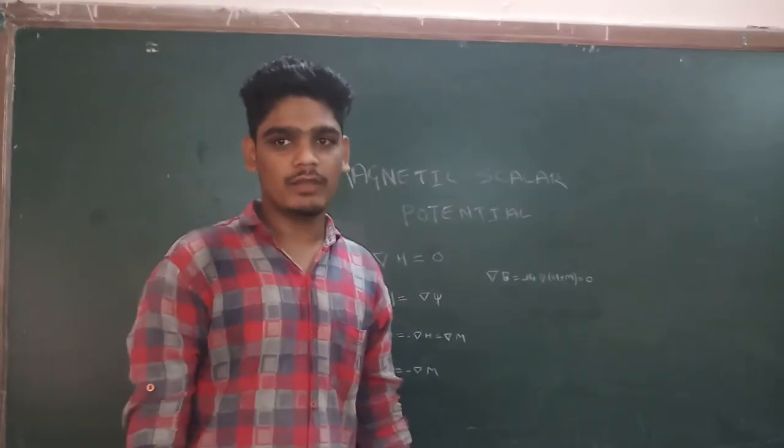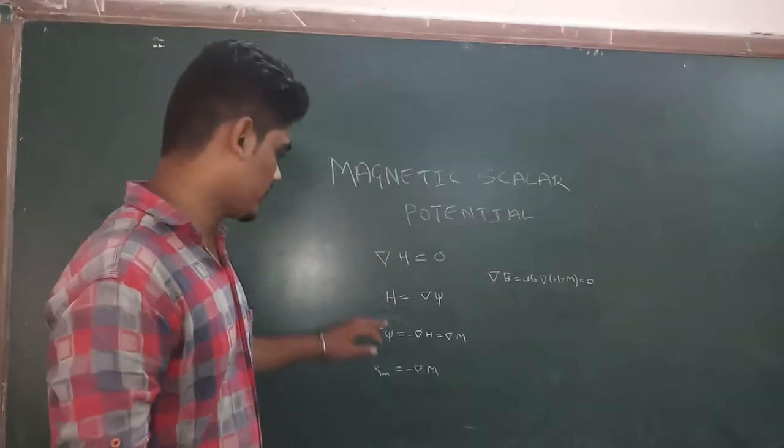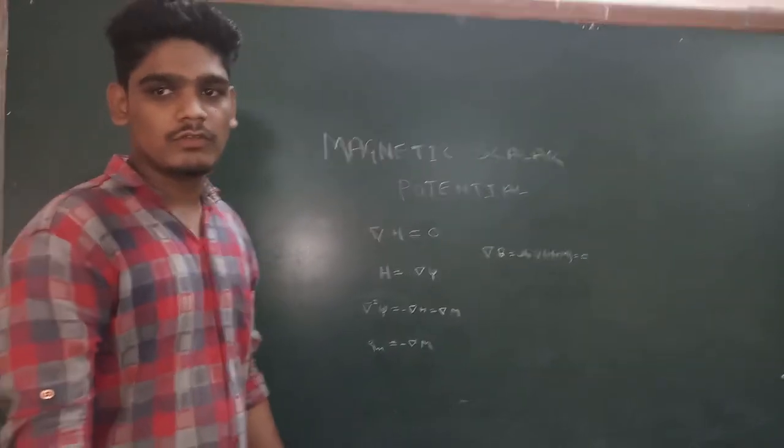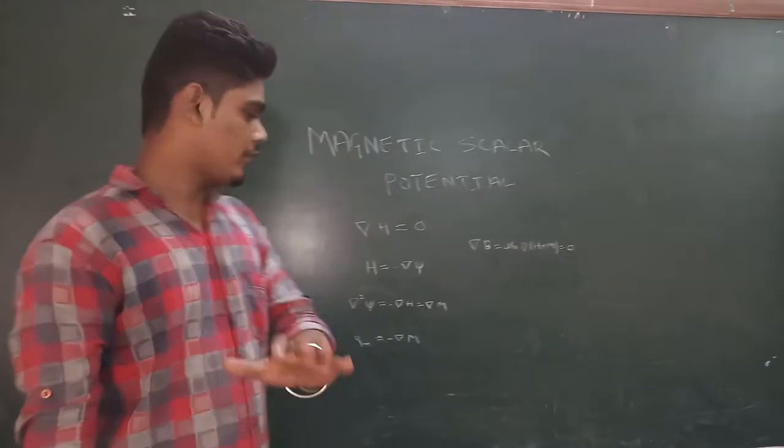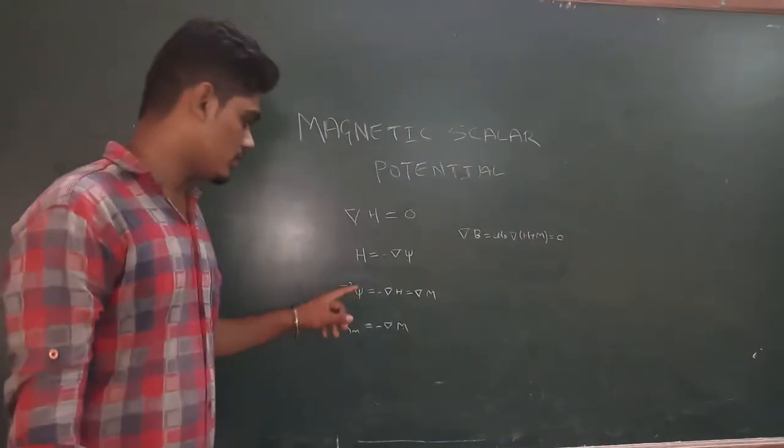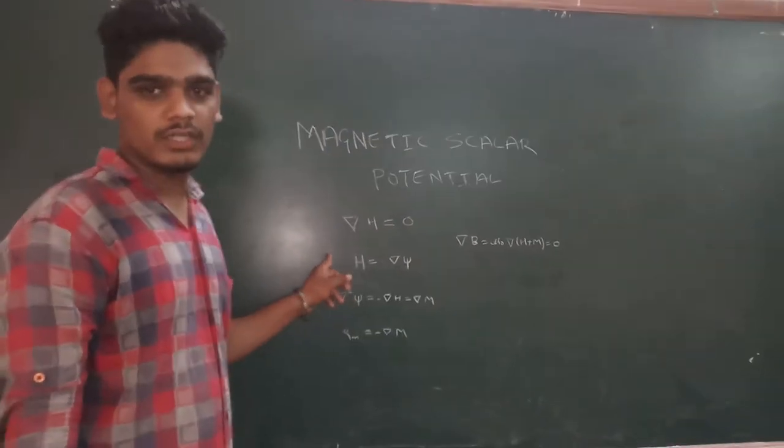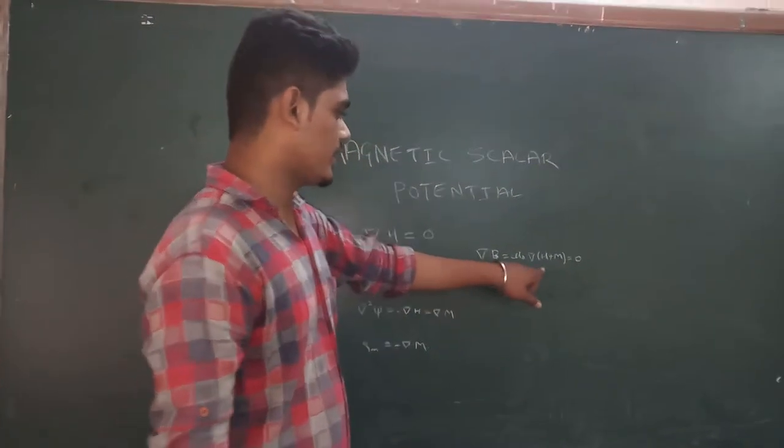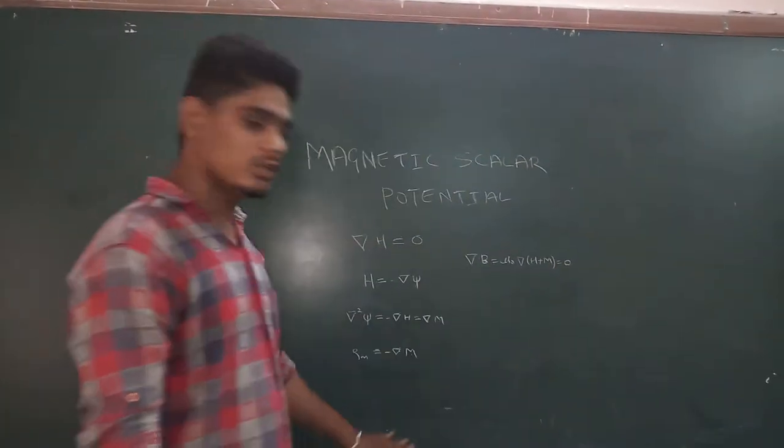Hence we can define the magnetic scalar potential: H = -∇ψ. Using the definition of H, ∇·B = μ₀(∇·H + M) = 0.